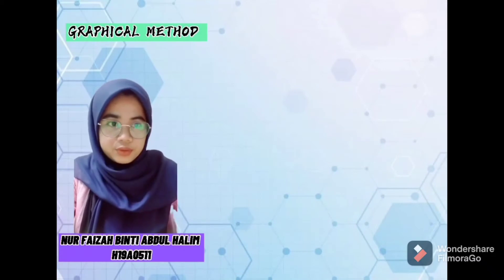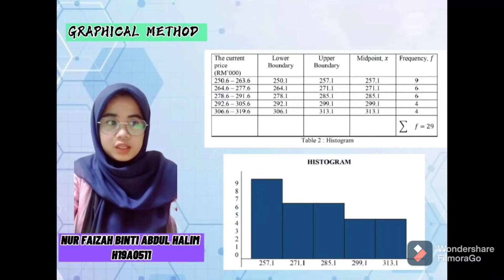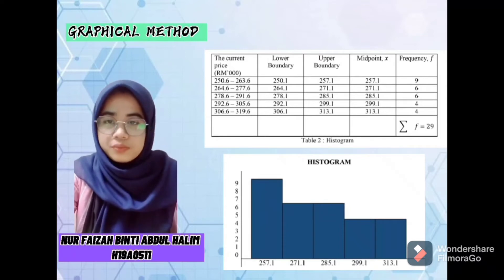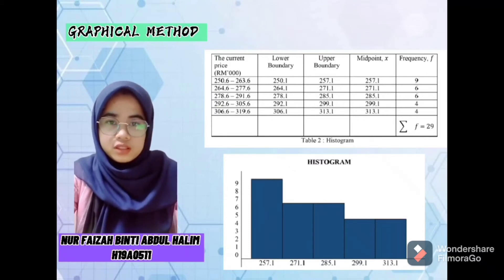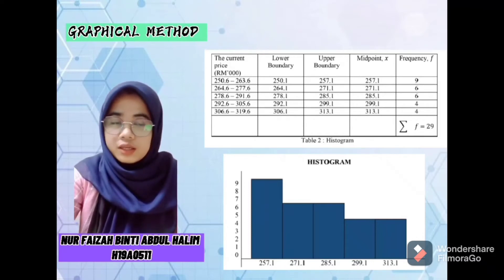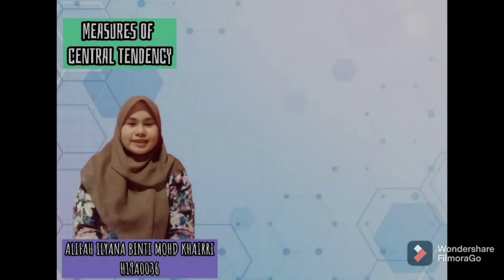The second method we use is the histogram table and graph. A histogram is a graphical display of data using bars of different heights. In a histogram, each bar groups numbers into ranges. Taller bars show that more data falls in that range. A histogram displays the shape and spread of continuous sample data. The table shows the histogram with the number of the current price, lower boundary, upper boundary, midpoint, and frequency.